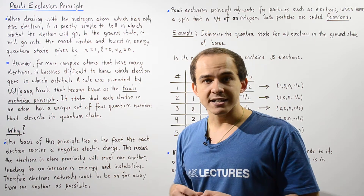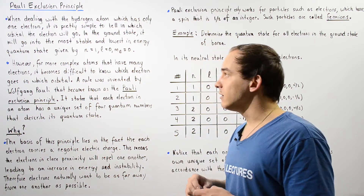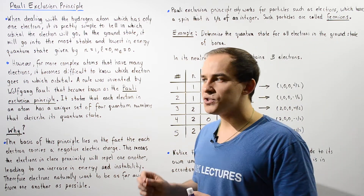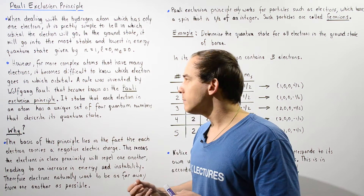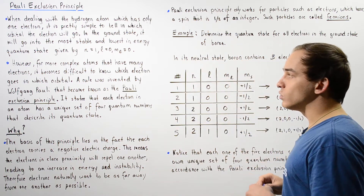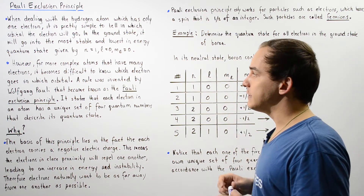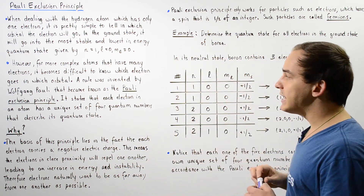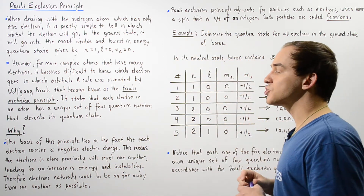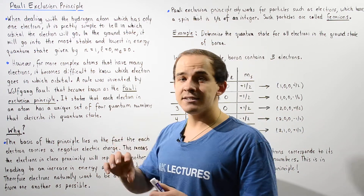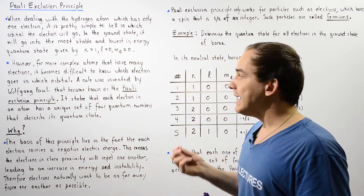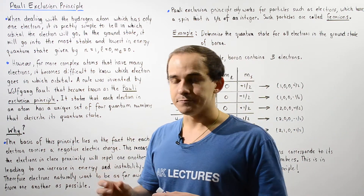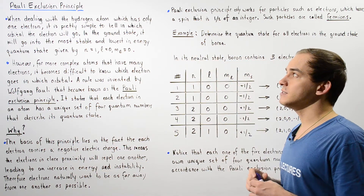Whenever we deal with more complex atoms that have many electrons, it becomes difficult to know which electron goes into which orbital. A rule invented by the Austrian physicist Wolfgang Pauli, which became known as the Pauli Exclusion Principle, helps us determine into which orbital we can place any given electron.